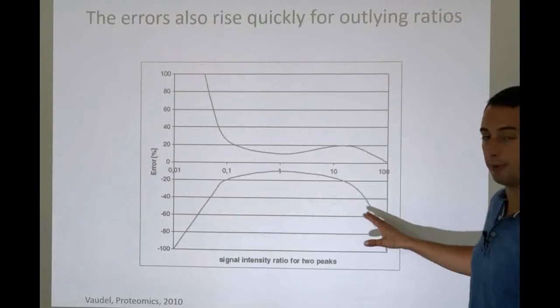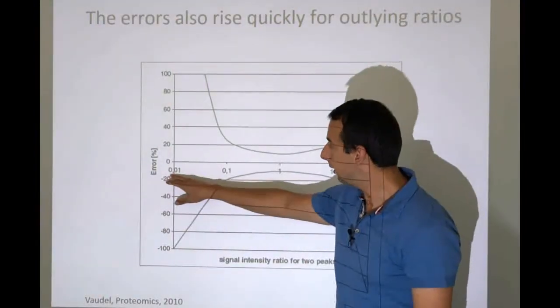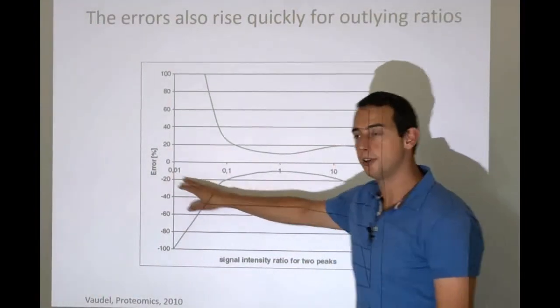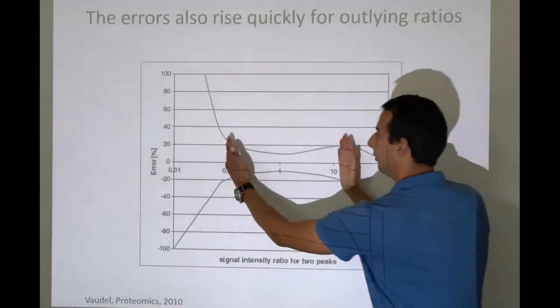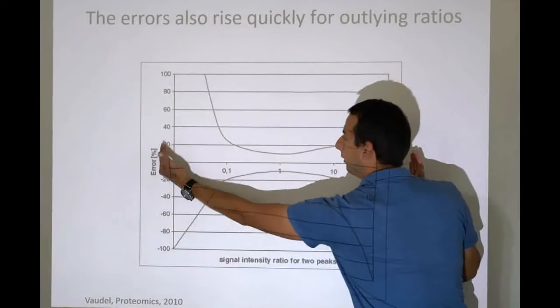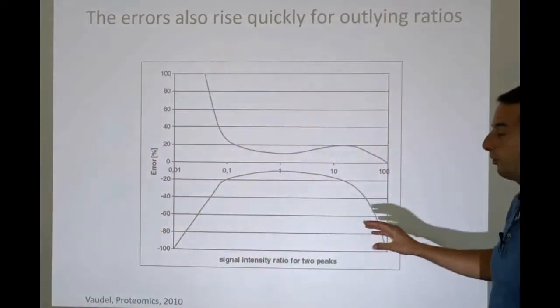This is a curve that was made by Mark Faudel, and it has a 1 over 100 to 100 over 1 ratio. So the previous chart showed us this range, and now we're looking at this range. This is on the log 10 scale.